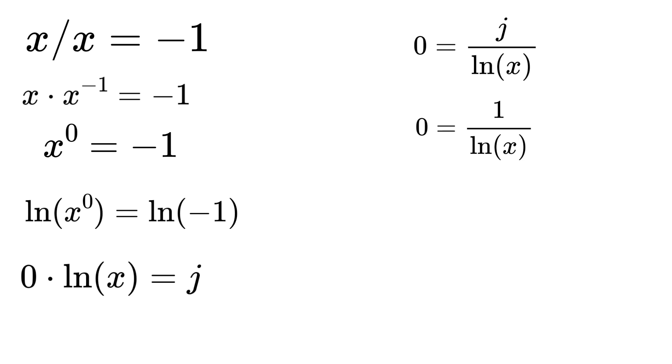Also, we can write the right side as log x to the power of negative one. So the equation becomes zero equals log x to the power of negative one. Now take the negative one root on both sides of the equation.